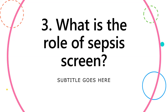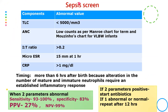Regarding the sepsis screen — neonatal immunity issues mean leukocytes and neutrophils do not reach infection sites effectively. The sepsis screen is a composite panel including total leukocyte count below 5000, absolute neutrophil count using the Manroe or Mouzinho chart for neutropenia, immature-to-total neutrophil ratio above 0.2, micro-ESR, and C-reactive protein. If two or more components are positive, the screen is positive — with sensitivity 93% and specificity 83%.